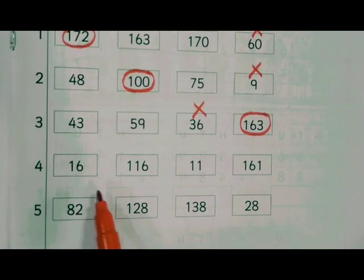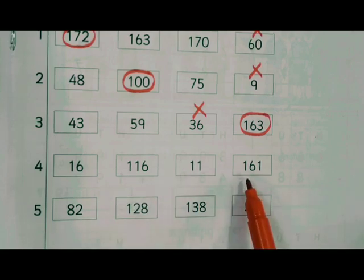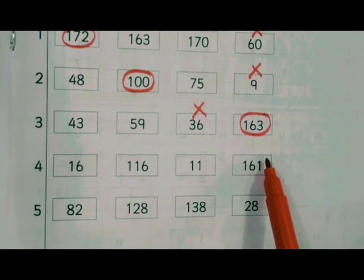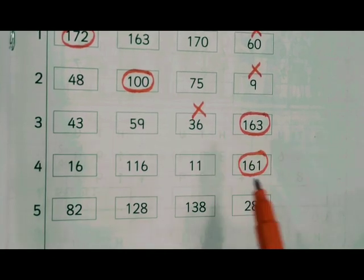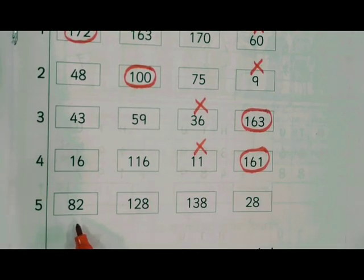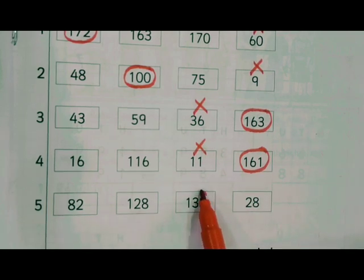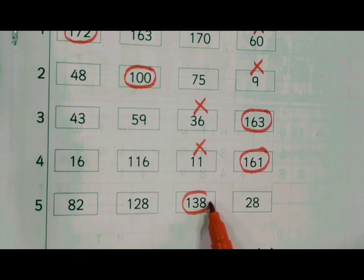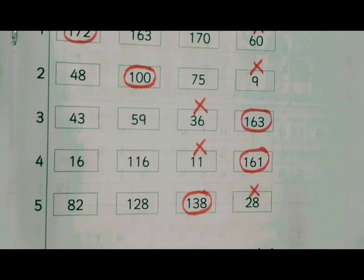16, 116, 11, 161. So this is the greatest number, 161, and this is the least number, 11. Next: 82, 128, 138, 28. 138 is the greatest number and 28 is the least number.